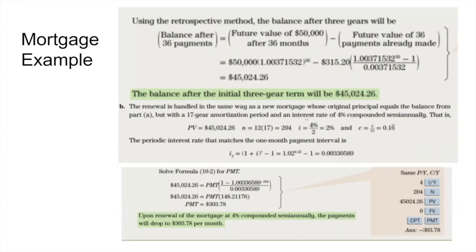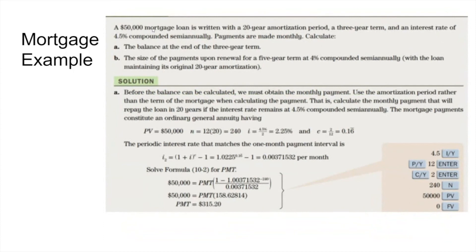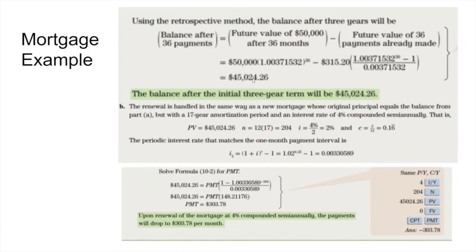In order to find the value after three years, we figure out the balance after 36 payments — three years × 12 months. We take the future value of $50,000 after 36 months and subtract the future value of the 36 payments already made. That minus gives us $45,024. So effectively, after three years, this $50,000 mortgage will have paid down less than $5,000 — you'll have a balance of $45,000 remaining.